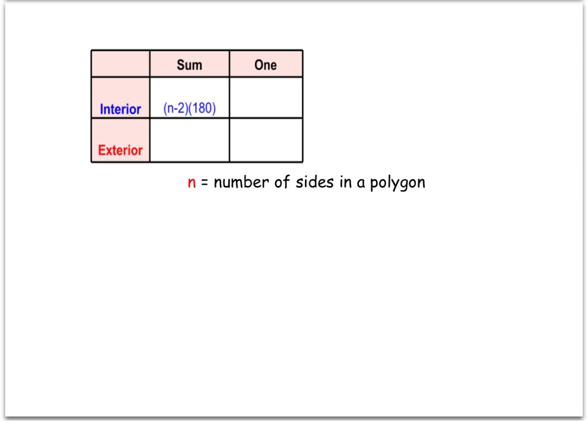For any polygon with n sides, if we subtract two from that number, that's going to be how many triangles we can create in that polygon.